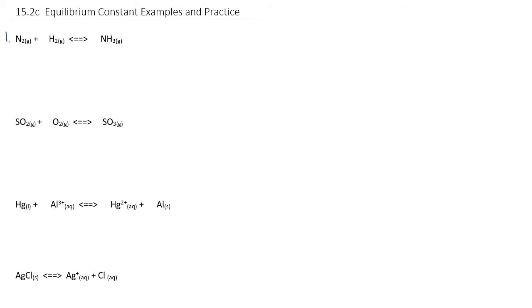Let's practice writing equilibrium expressions for some different chemical reactions. In the first one, we have nitrogen gas, hydrogen gas, and ammonia gas — and these are all gases. We can measure the concentration of gases; it's dependent on pressure and temperature as well. We can increase the amount of gas molecules in a given space by increasing the pressure, and that changes the rate of effective collisions. So we can definitely use gases in our equilibrium constant.